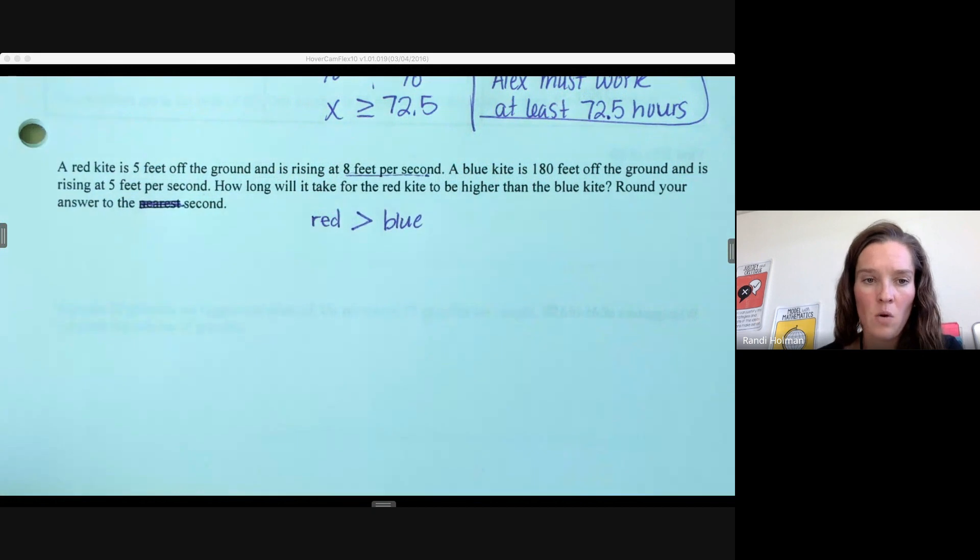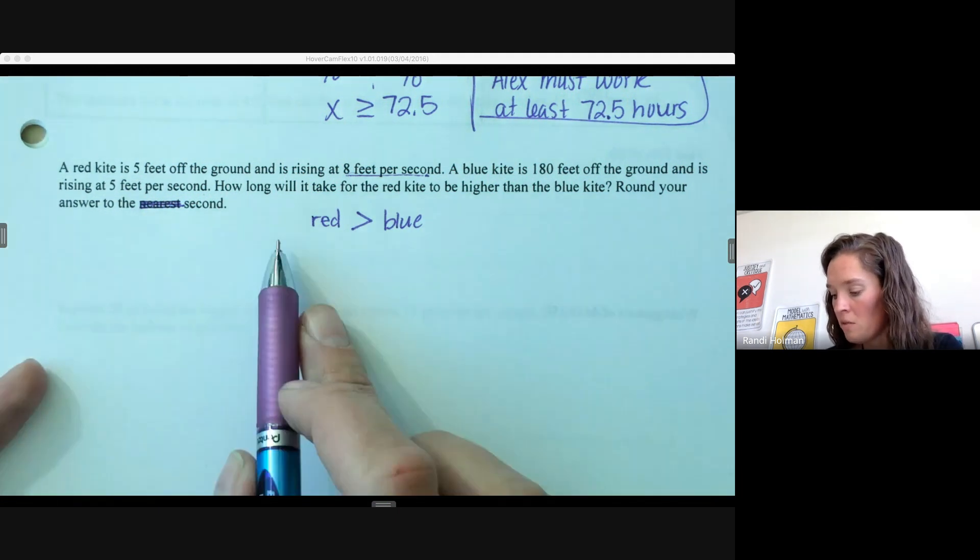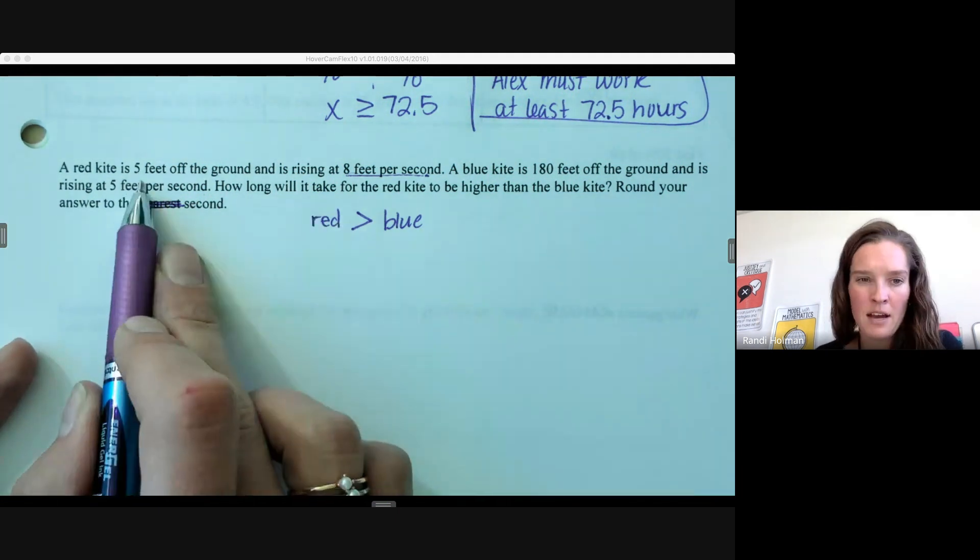Because since this is an inequality, we want to make the answer actually work. We want to round to the second. I don't want to say it's 2.4 seconds—if it was 2.4 seconds, we'd have to go up to 3 seconds to get the red kite higher than the blue kite. We'll come back to that when we get closer. The red kite—what's happening? It is 5 feet.